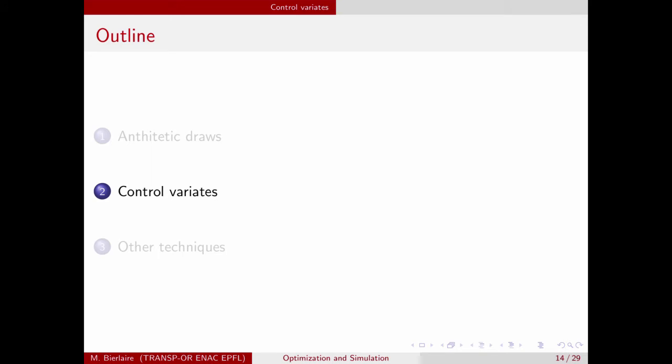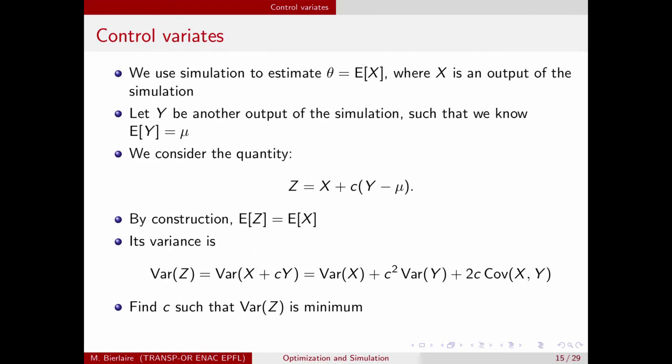That is the main message about antithetic draws: it is extremely simple to implement and can provide very significant improvement in variance, as we saw in the simple example. But it does not always work — you must verify that the function h used to obtain your variables is monotonic in u. Now the second technique is called control variates. This one will guarantee that the variance will always be reduced — it cannot be increased — at the price of being a little more complicated.